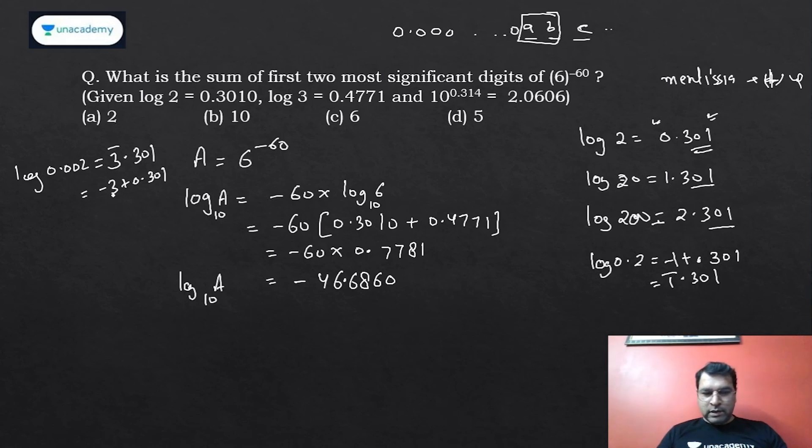Are we clear? You can observe that whenever the characteristic is -3, there are two zeros after decimal. This is how we solve the question: how many zeros after decimal and before the most significant digits. If it is 3̄, there will be two zeros.